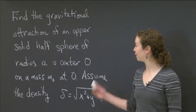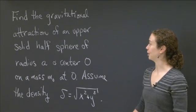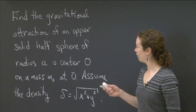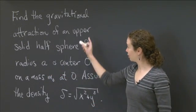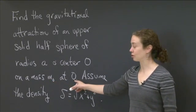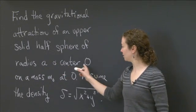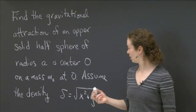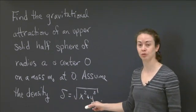Welcome back to recitation. In this video, I'd like us to work on the following application for spherical coordinates. We want to find the gravitational attraction of an upper solid half sphere of radius a and center O — that's the gravitational attraction on a mass m0 at O. We have a solid half sphere of radius a and center O, and we want to find the gravitational attraction of the half sphere on the mass. We're going to assume that the density delta is equal to the square root of x squared plus y squared.